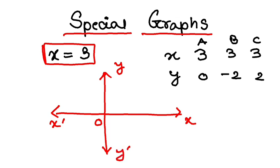And if I now try to plot the points, so 3, 0, this is my a. And I have 3, minus 2, so this is my b, and I have 3, 2. So this is my c.